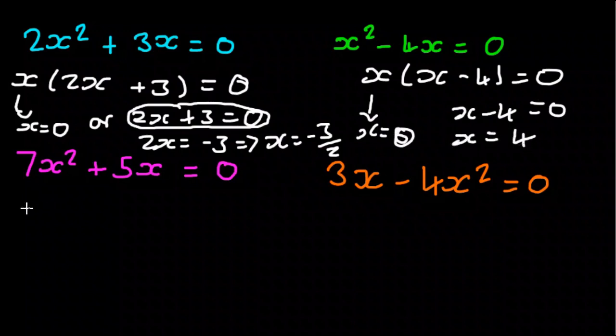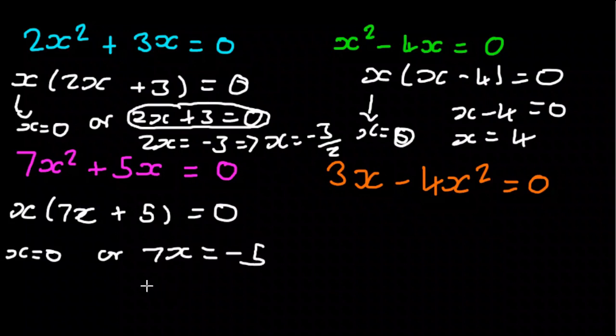Okay, next one. Again, we can take out an x, and then we get 7x plus 5 equals 0. So we get x equals 0 or 7x plus 5 equals 0. So 7x equals minus 5, which means x is equal to minus 5 over 7.